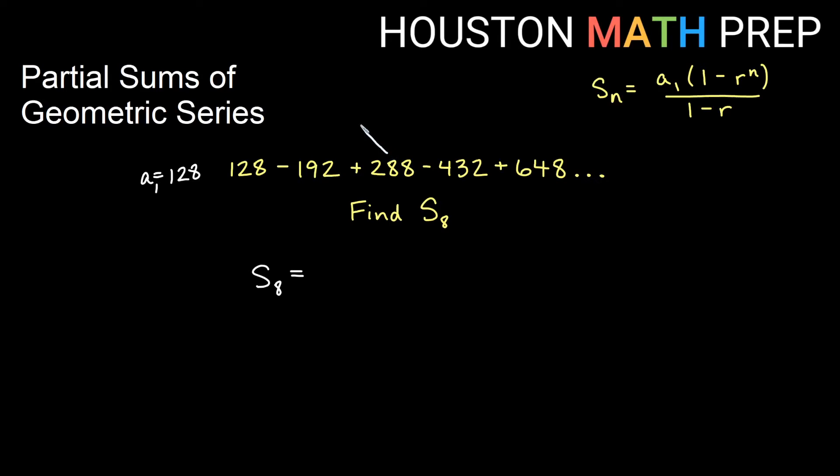So if you want to go ahead and take 288 and divide it by negative 192, that will give you what your ratio is. So we'll say r is equal to 288 divided by negative 192. And if you do that, you'll end up seeing that r ratio is negative 3 halves.